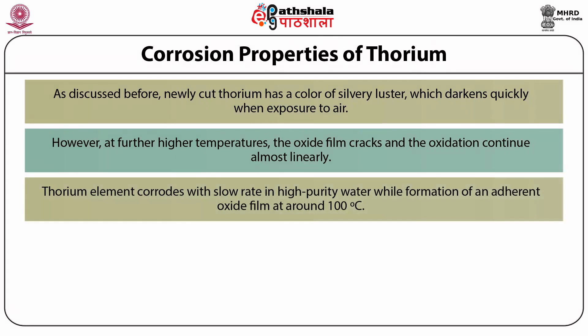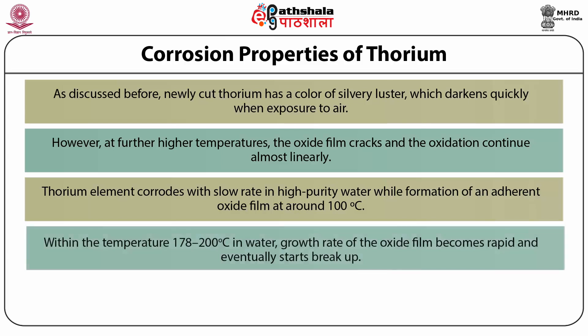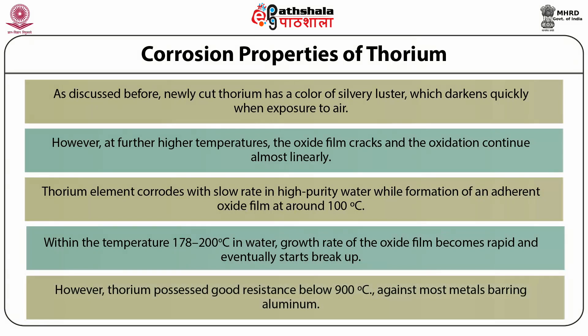Thorium corrodes at a slow rate in high-purity water while forming an adherent oxide film at around 100°C. Within the temperature range of 178 to 200°C in water, the growth rate of the oxide film becomes rapid and eventually starts breaking up. The reaction becomes very rapid at around 315°C. However, thorium possesses good resistance below 900°C against most metals, barring aluminium.